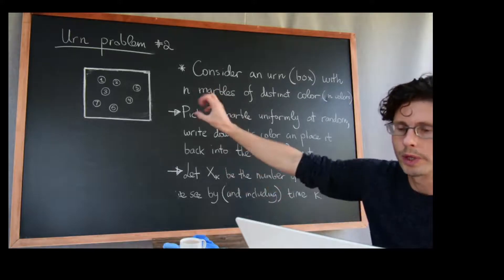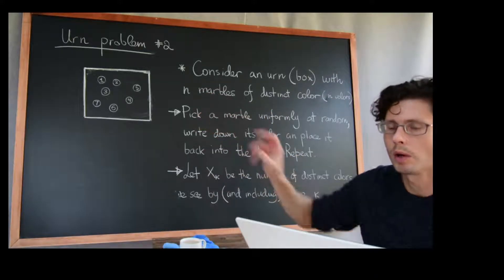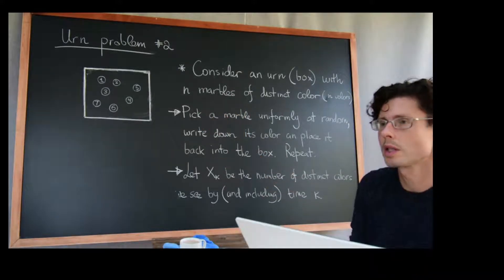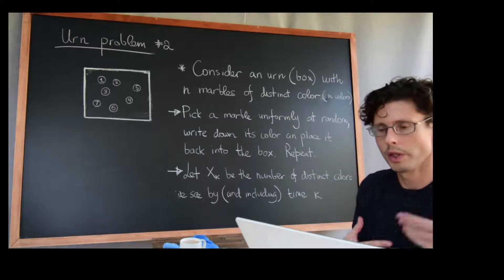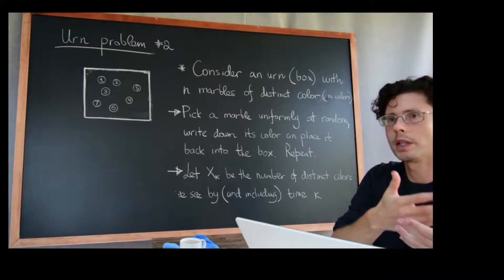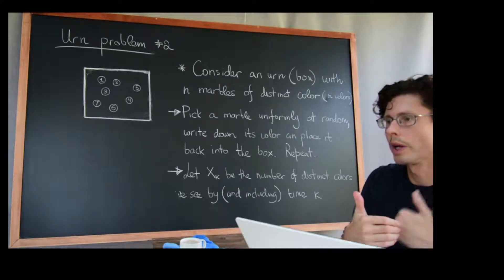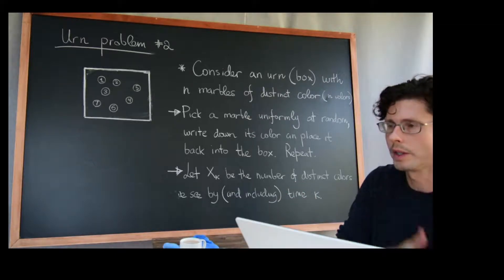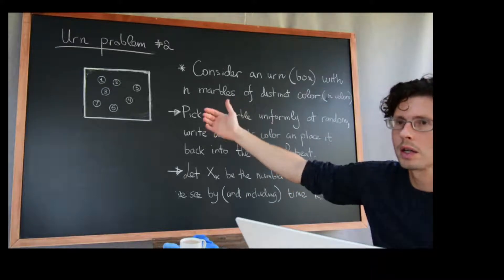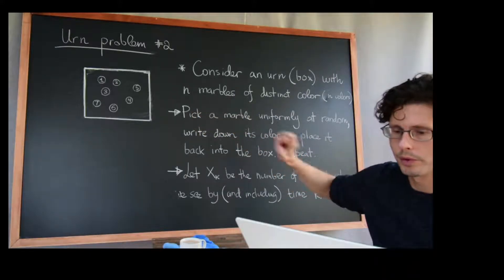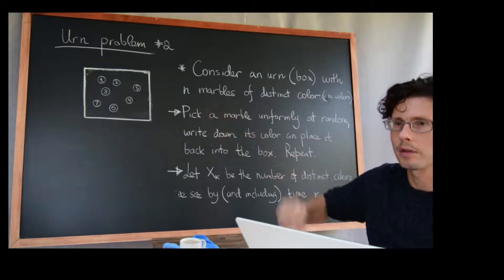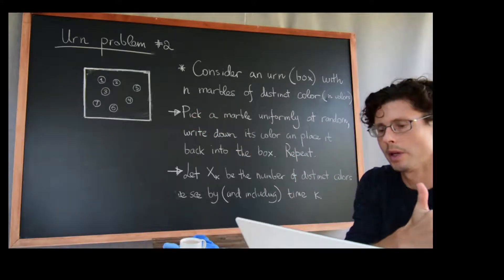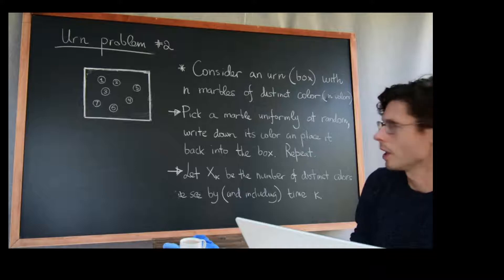We're going to think of the following stochastic process: pick a marble uniformly at random — all choices are equally likely — look at its color, write down that color, put the marble back in the box, and keep going. On one hand I have this sheet of paper where I write down all the colors I've seen — red, green, blue, maybe red again, yellow, and so on — a growing list. On the other hand, nothing really changes in the box at each time step.